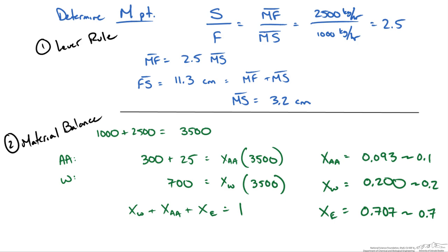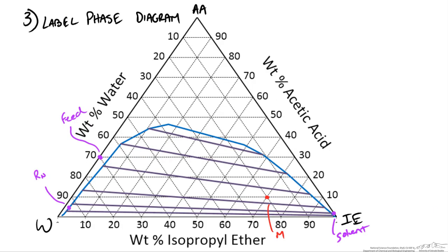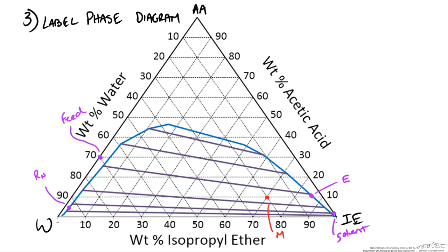Now we have our mixture point. We know the raffinate and extract must intersect through this mixture point, so we draw a line from our raffinate through the mixture point to the other side. Where it intersects our equilibrium line we have our extract. Since this is a countercurrent process, the extract comes out of the same stage as our feed, so this is E1. We now have our four points.